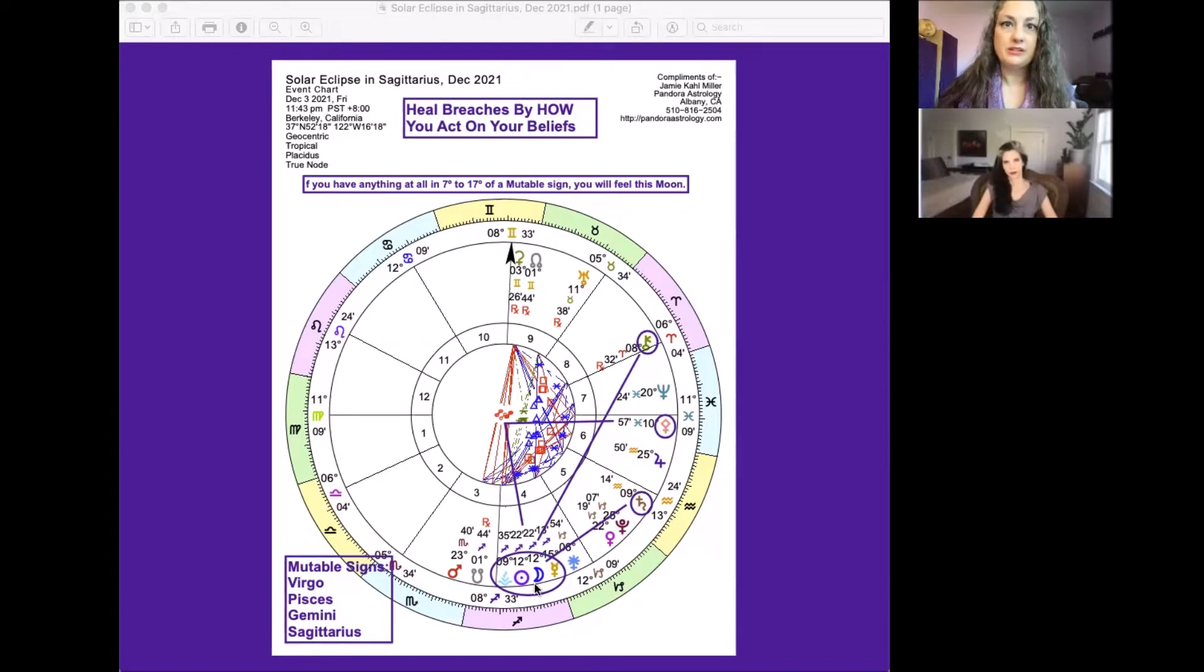A solar eclipse, unlike a lunar eclipse, is not as emotional. It's more physical. It's more actional. So because during eclipses, you've got to watch your shadow. Your shadow is going to come up and it's going to reveal things to you about yourself. And with a solar eclipse, it does that through your behavior.